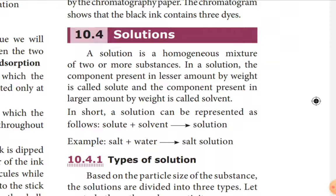This can be represented as an equation: solute plus solvent gives solution. For example, salt (sodium chloride) dissolved in water gives a salt solution. Salt is the solute — present in lesser amount by weight — and water is the solvent — present in larger amount by weight — giving us a homogeneous mixture.